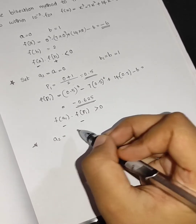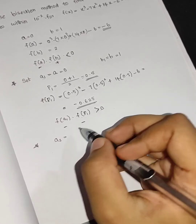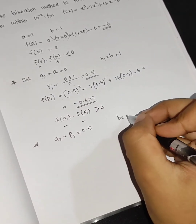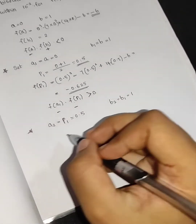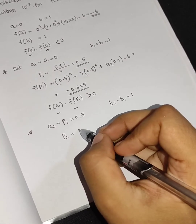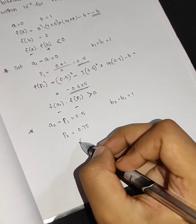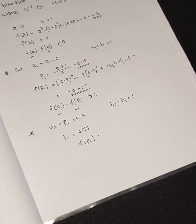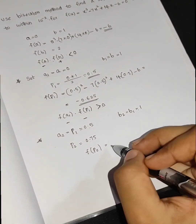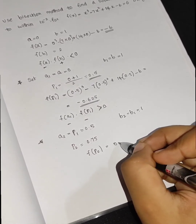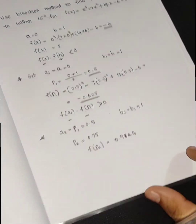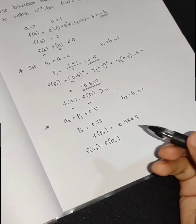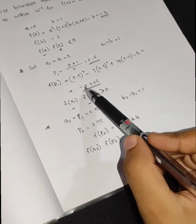A2 is equal to P1, which is 0.5. B2 is equal to B1. P2 = 0.75. F(P2) is approximately 0.9844. We check F(A2) × F(P2): F(A2) comes from P1 with a minus sign, giving the sign comparison.